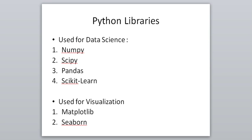Let's discuss the most important Python libraries for data science and machine learning. The first is NumPy, second is SciPy, then Pandas, and scikit-learn — these four are the most commonly used for machine learning and data science. For visualization, you mostly use Matplotlib and Seaborn.